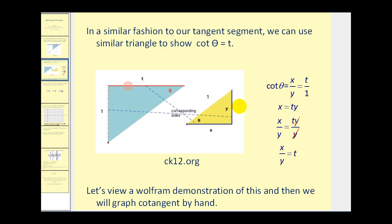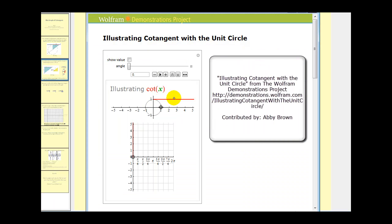Let's look at a Wolfram demonstration to illustrate this. In red, we have the cotangent segment. At an angle of zero radians, or zero degrees, the cotangent segment has an infinite length, and therefore there's a vertical asymptote at zero degrees, or zero radians.